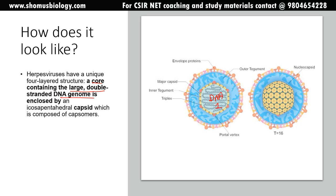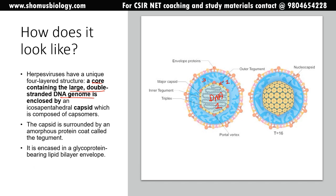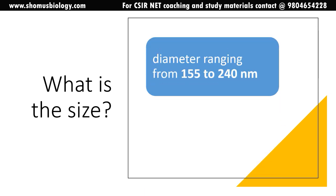The second layer of organization is the icosahedral capsid. The capsid is surrounded by an amorphous protein coat known as the tegument protein — that is the third layer. The fourth layer is the lipid bilayer made with glycoproteins. These envelope proteins on the surface act as receptors with which the virus interacts with the host cell, enabling engulfment and initiation of viral particle release.